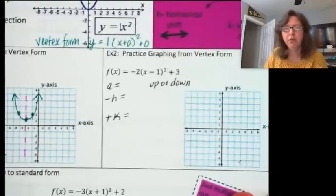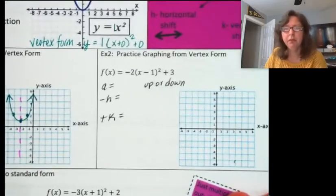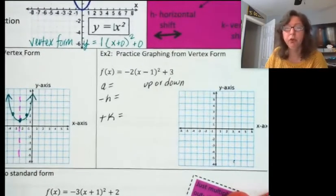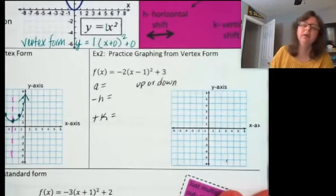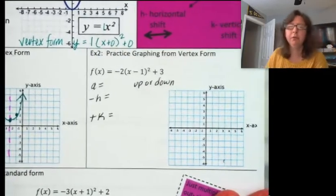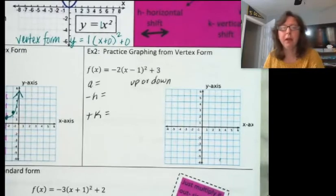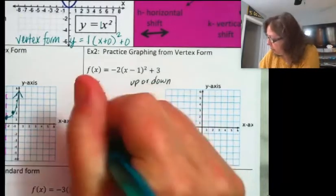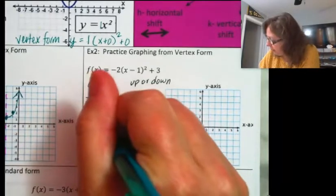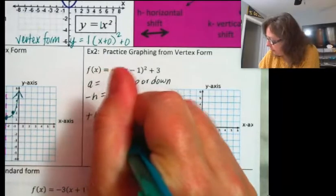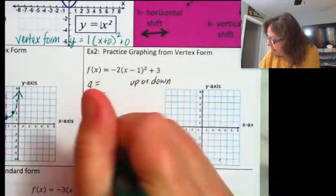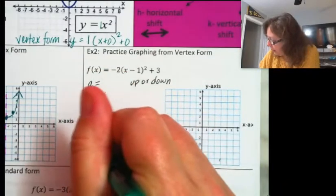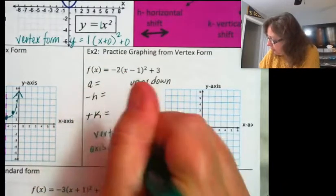Why don't you pause the video and give example 2 a try? See if you're able to figure out the a, h, and k values. Tell me what the vertex is and tell me what the axis of symmetry is.